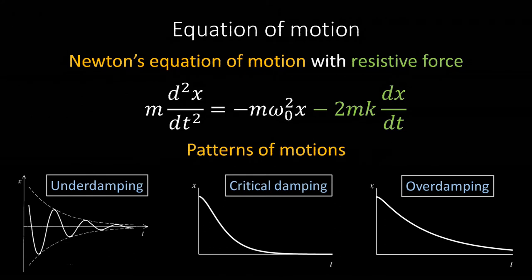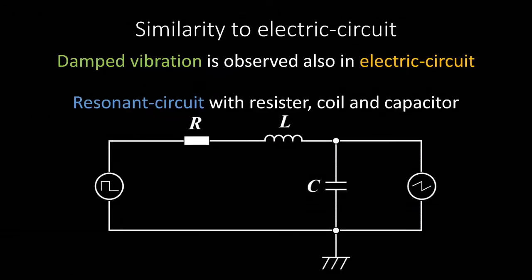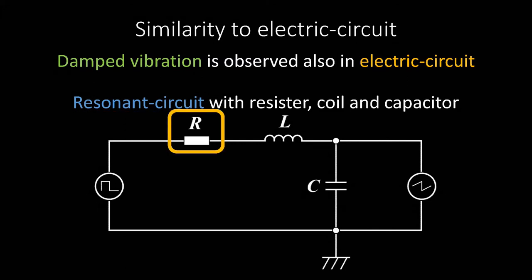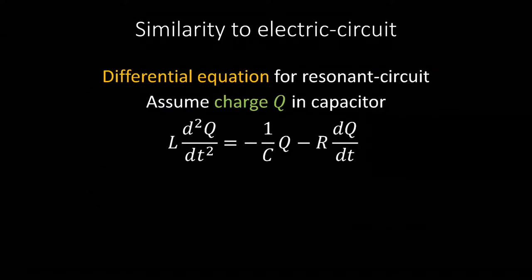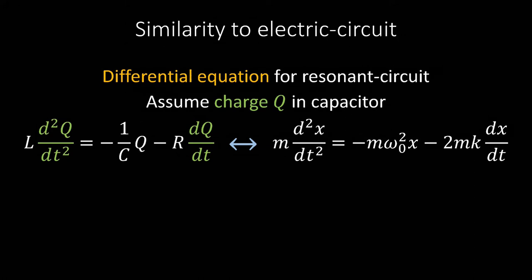The phenomenon of damped oscillation can also be observed in electric circuits. The electric circuit in which damped oscillations can be observed is a resonant circuit called an RLC circuit, consisting of a resistor, a coil, and a capacitor. Writing a differential equation of q — the charge stored in the capacitor — we get an equation that contains time derivatives, just like Newton's equation of motion, and has exactly the same form as that differential equation.